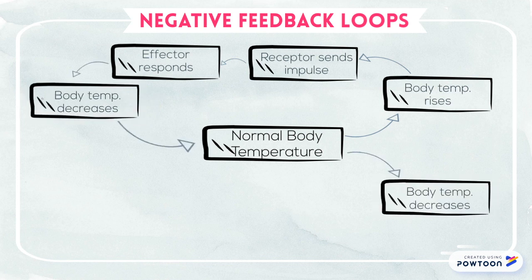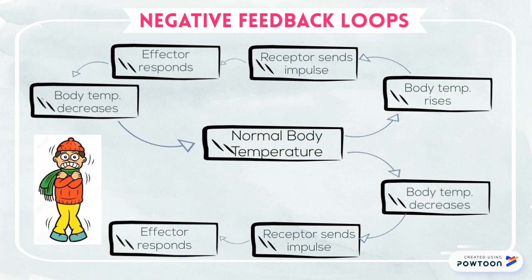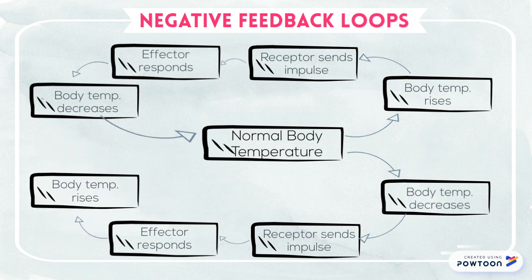If the body temperature decreases too much, however, it goes through a similar cycle. This deviation is detected by a nerve receptor, which again sends a signal to the control center, or the hypothalamus. The brain commands the skeletal muscles to shiver in order to generate heat, and the skin blood vessels to constrict in order to reduce heat loss. As a result, the body temperature rises, and thus the negative feedback loop is complete.